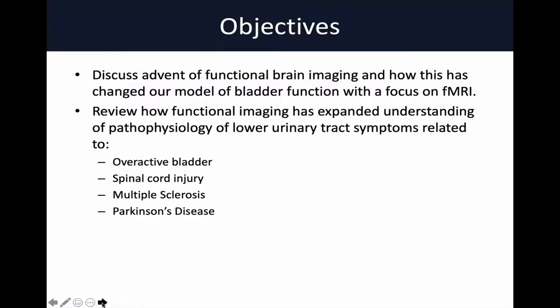Our objectives for today are: first, to discuss the advent of functional brain imaging and how this has changed our current models of bladder function with a direct focus on functional MRI. Once we go through the basics and foundations of functional MRI, we'll explore how these advancements have expanded our knowledge of the pathophysiology of lower urinary tract symptoms related to OAB, and examples of neurogenic bladder like spinal cord injury, MS, and Parkinson's disease.